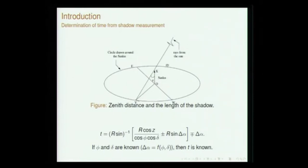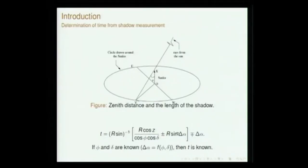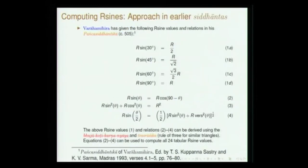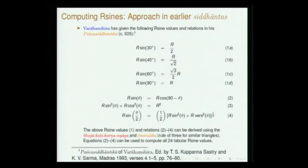As I showed earlier when we discussed Shulva Sutras, the precise computation of time can be had using formulas where sin and cosine functions appear, as well as inverse functions. In Panchasiddhantika, values of sine are very clearly stated — sin 30, sin 45, sin 60 and so on — and by constructing a certain triangle one can easily determine all these values.